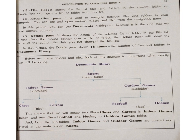The next one is the Details Pane. It shows the details of the selected files or folders in the file list. If you place the mouse pointer over a file or folder, the details pane will show the name of the author and the date you last changed the file. For example, who has created the file and when it was last changed — this type of information we can get from the details pane. In this picture, the details pane shows 18 items, which is the number of files and folders in the Documents library.